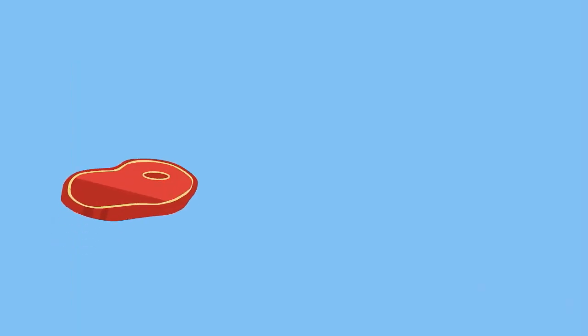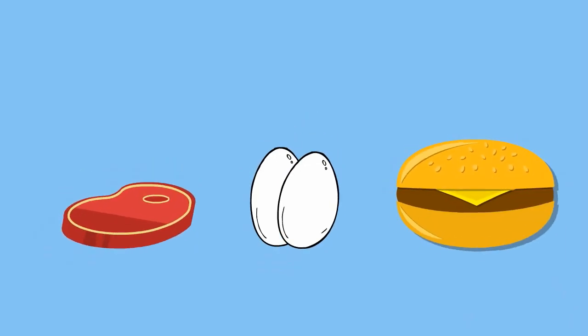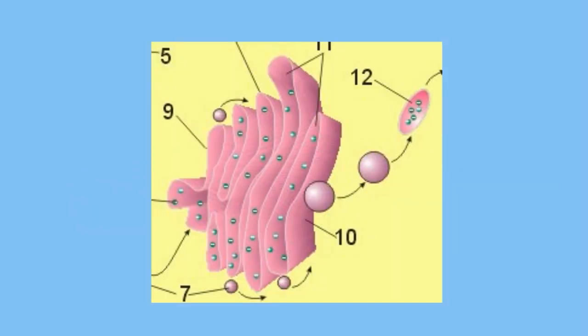The smooth ER also produces lipids which are important fats used by the cell. The smooth ER will transport these lipids throughout the cell or will package the lipids in sacs called vesicles and release them into the cytoplasm.